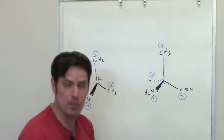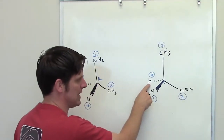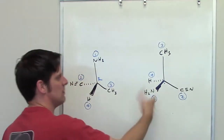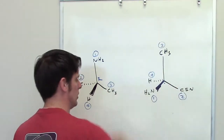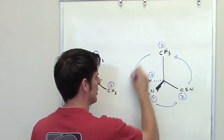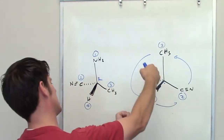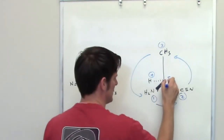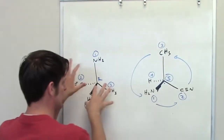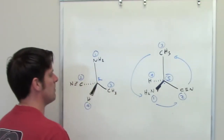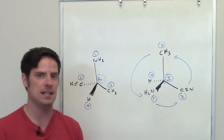I have to make sure priority group number four is pointed three-dimensionally away from me. In this particular case, it actually is, as indicated by the dashed bond — it's pointing away from us. So I go from one to two to three, and that traces a circle that is counterclockwise. Counterclockwise means turning left — S configuration. This molecule has the exact same four groups as the one to the left, except the molecule to the right is S and the molecule to the left is R, which means they are indeed enantiomers.